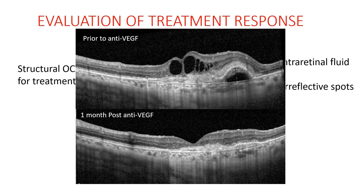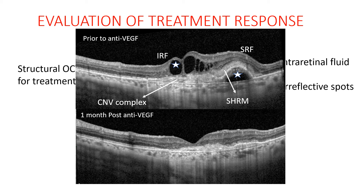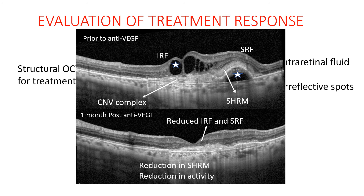Here we can see the above image is of structural OCT prior to anti-VEGF injection, where there is evident intra-retinal and sub-retinal fluid, sub-retinal hyperreflective material, and the CNVM complex. One month after giving anti-VEGF injection, there is evident reduction in both intra-retinal and sub-retinal fluid, reduction in sub-retinal hyperreflective material, and thus reduction in CNV activity.